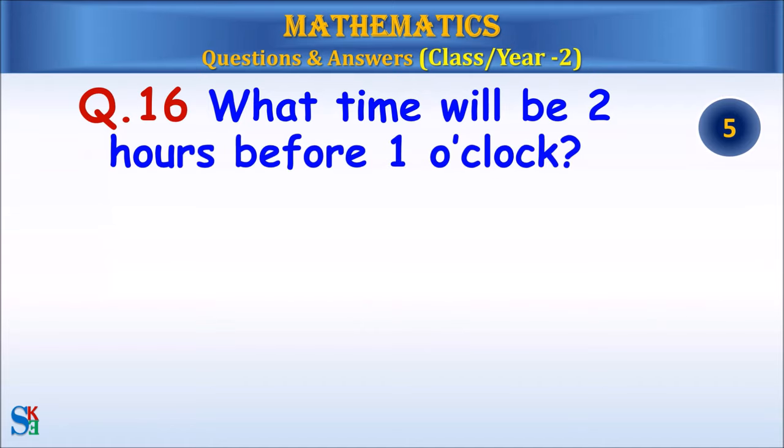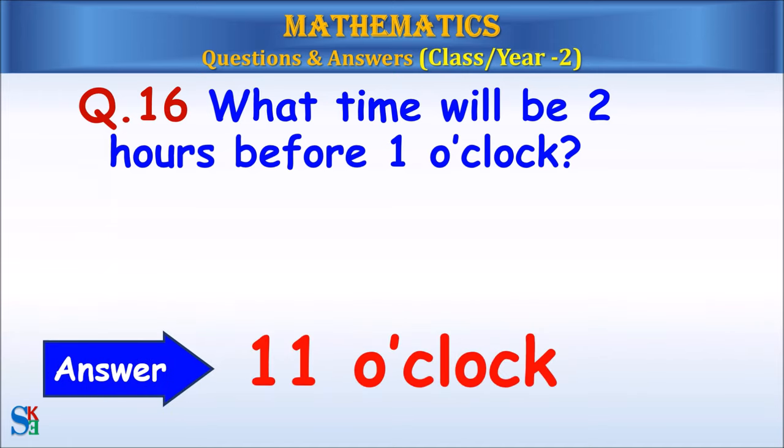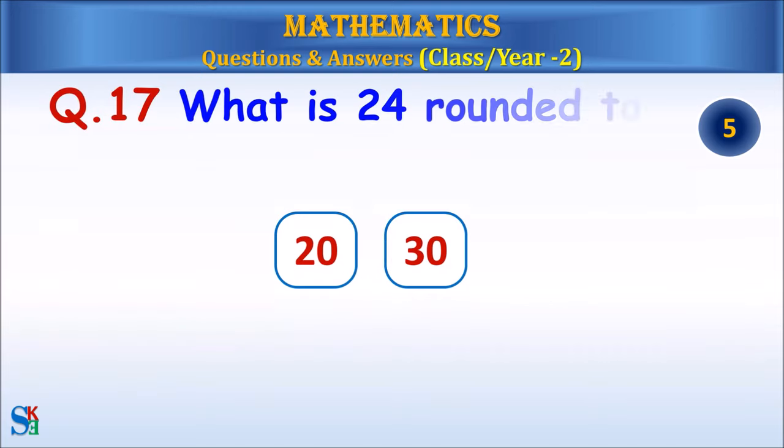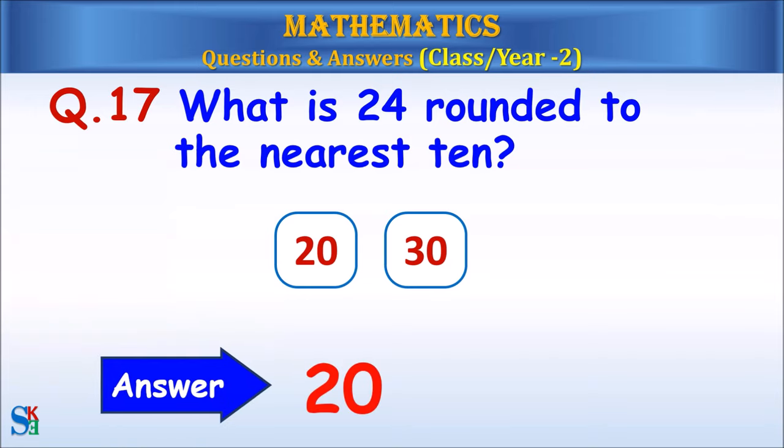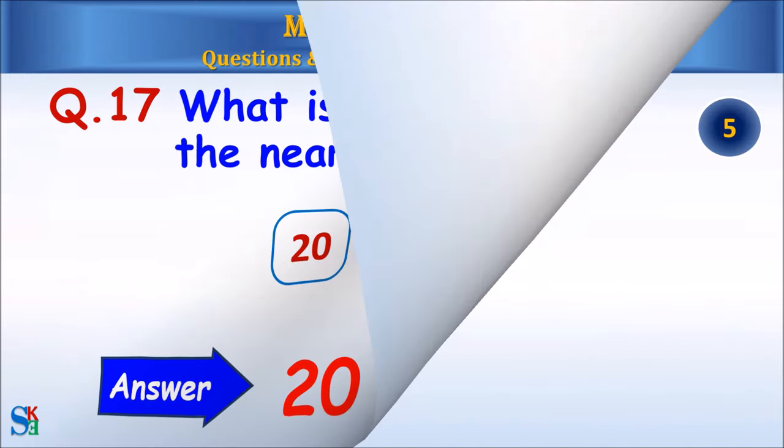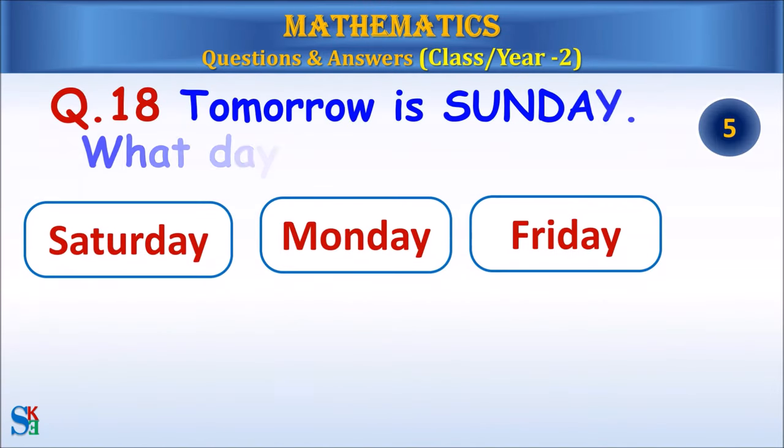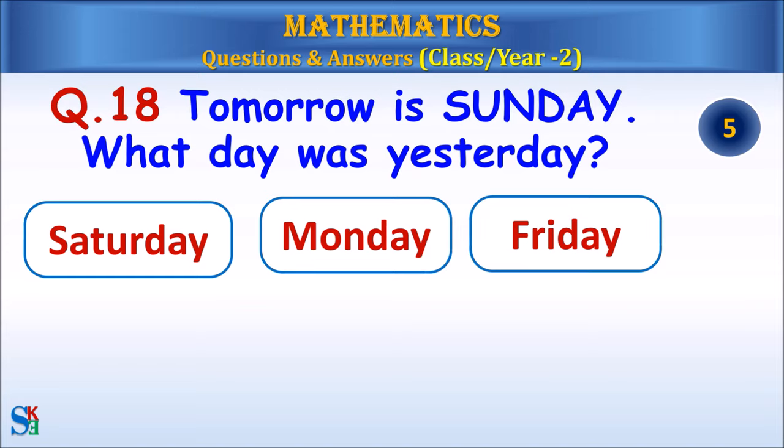Question 16: What time will it be two hours before one o'clock? Answer: 11 o'clock. Question 17: What is 24 rounded to the nearest ten? Answer: 20. Question 18: Tomorrow is Sunday. What day was yesterday? Answer: Friday.